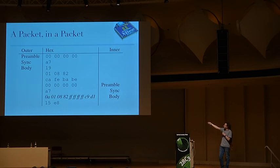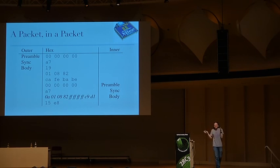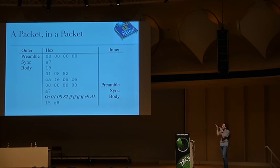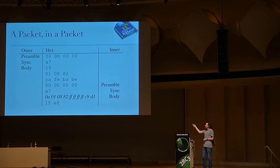This is followed by the familiar fields: 0x19 hex is the length; 0x01, 0x08, 0x82 are flags; CAFE is the source address and BABE is the destination address. And then, if inside the packet you put that same beginning — the zeros and the A7 — followed by a shorter frame that ends with a valid checksum, that's the inner packet in italics.